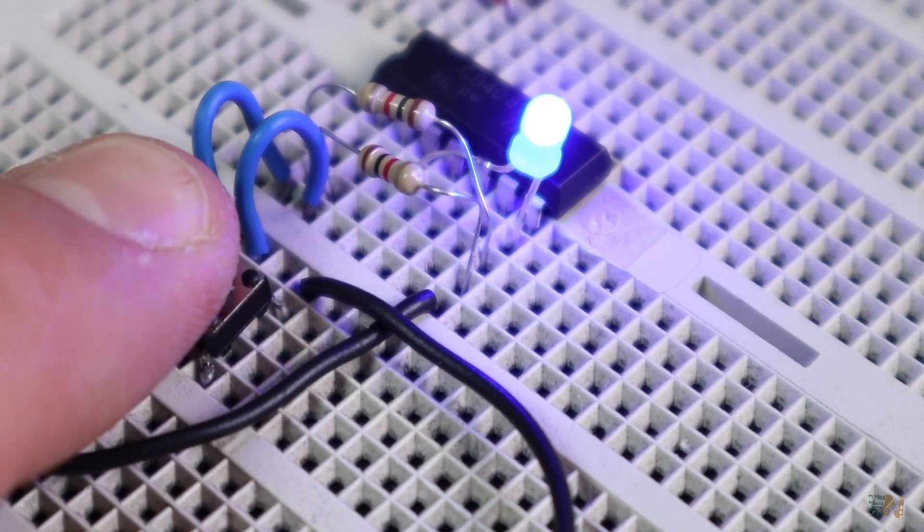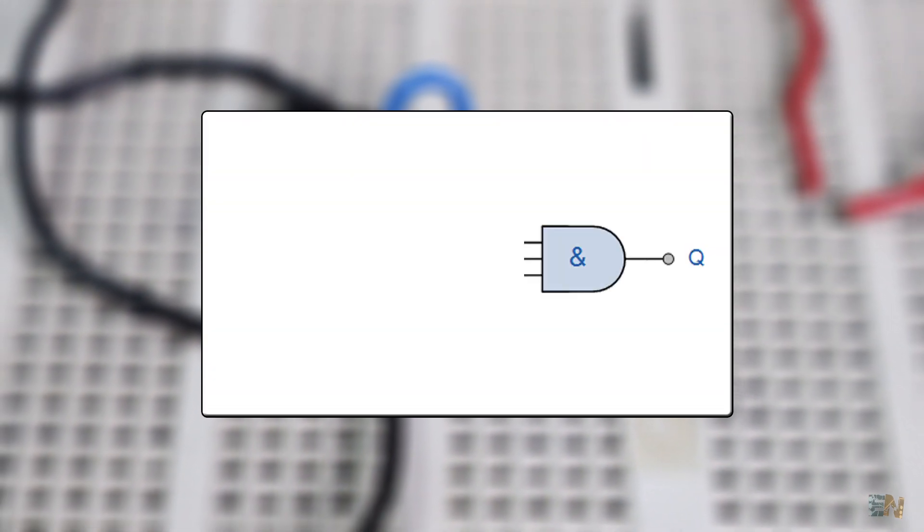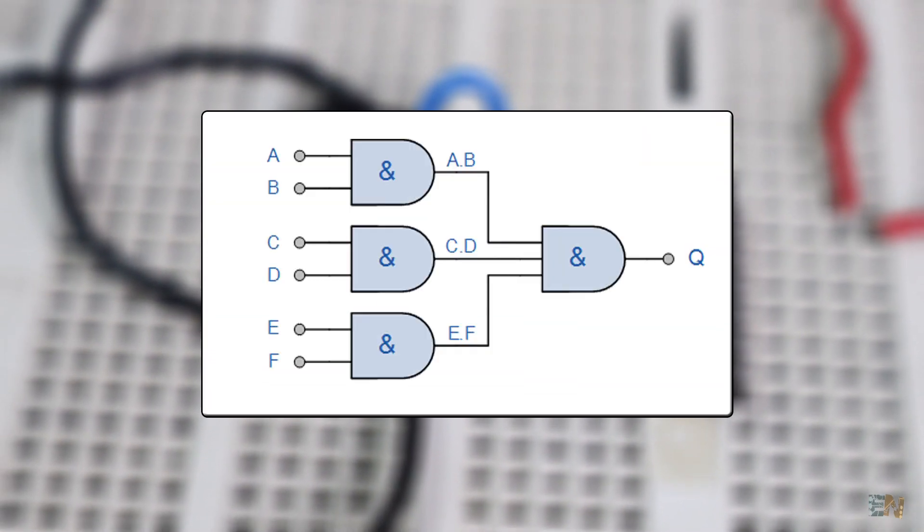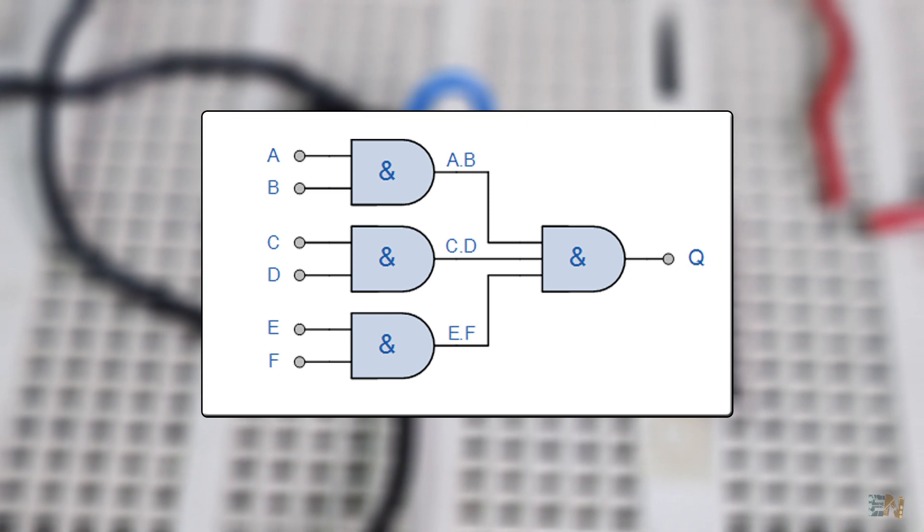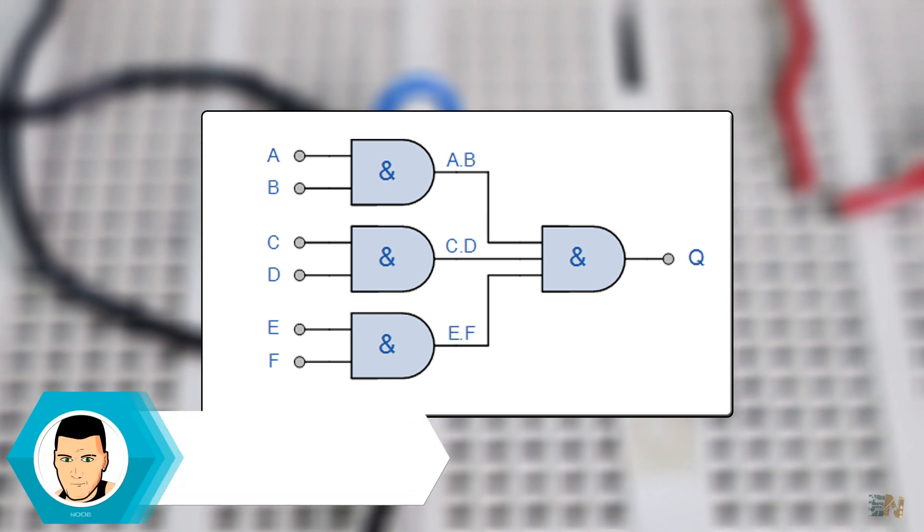Now this is the simplest AND gate with only two inputs. You could buy one with more inputs or just merge two double input ANDs together and make a 3 input one, or a 4, or a 5, or any amount of inputs but you should know that this combination will add a delay each time you add a new gate in series.